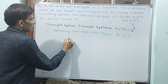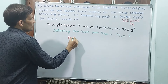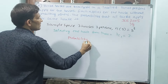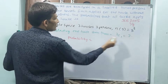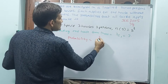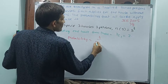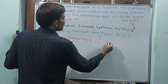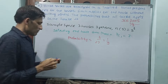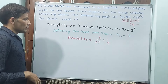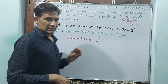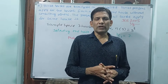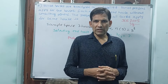Now, probability is equal to three divided by twenty-seven, that is equal to one by nine. One by nine will be your answer. To stop this class, we will continue tomorrow. Thank you very much.